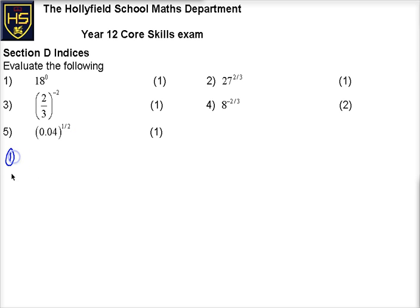So question number one, well anything to the power of zero, quite straightforward, is one. It's just like a definition. So anything to the power of zero is one, so that's kind of important, key one to know.